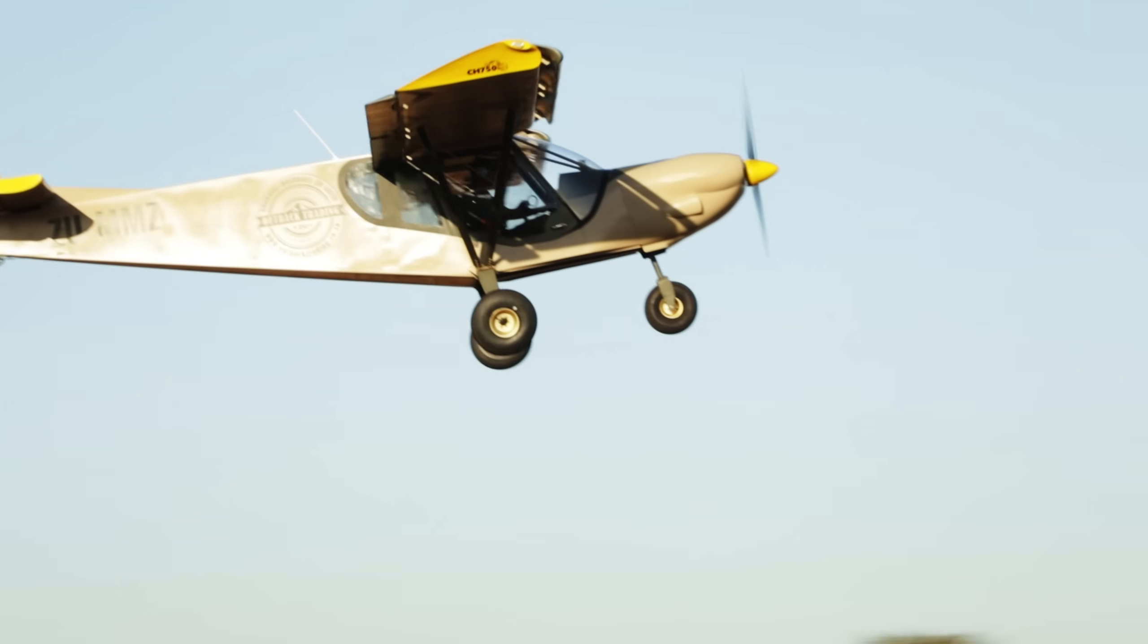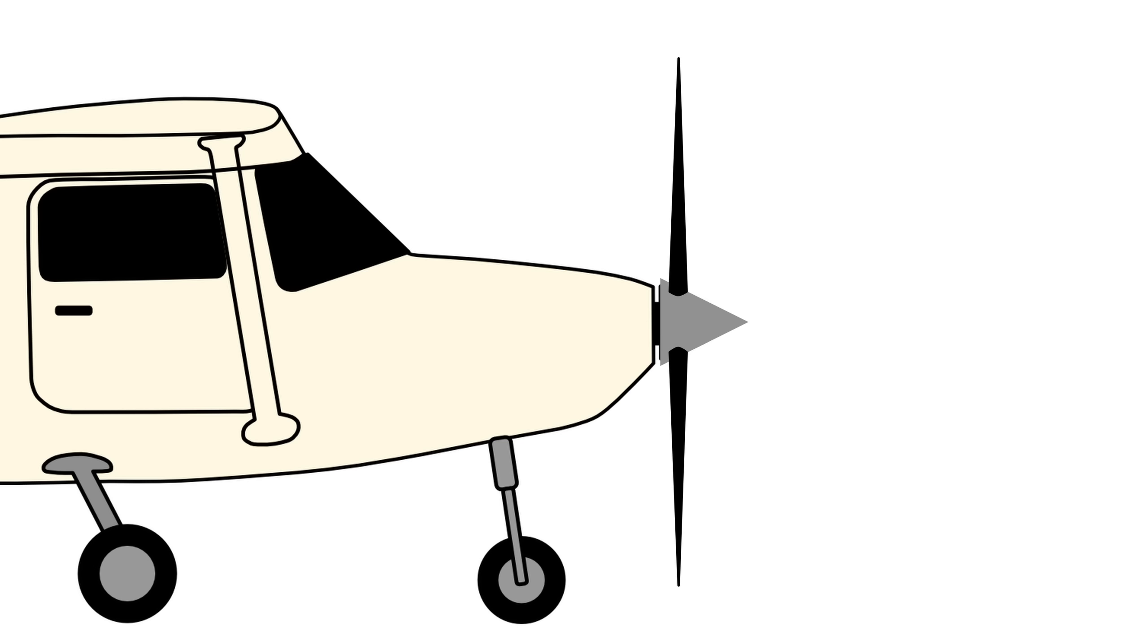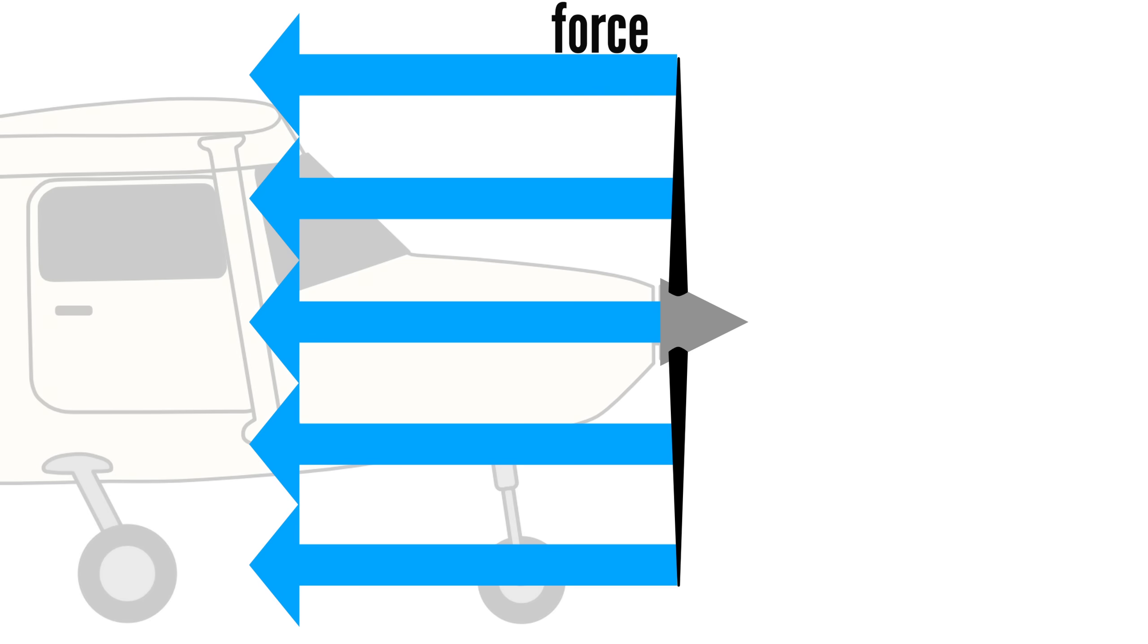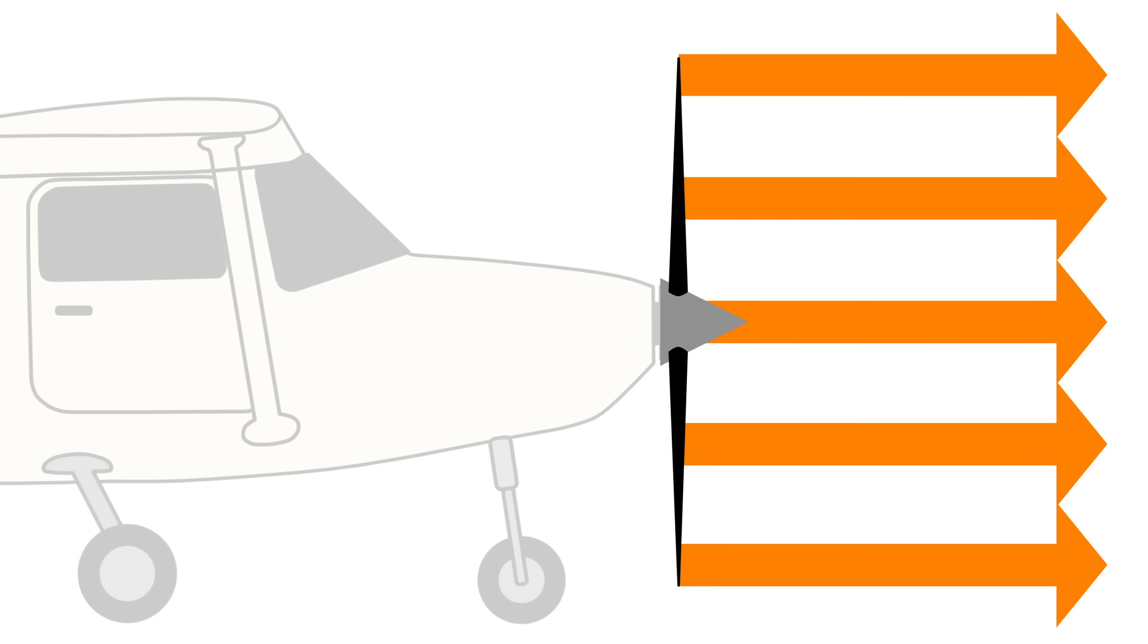When a propeller generates thrust, one of the forces acting on it is called thrust bending. As the propeller pushes air backward, it pulls forward with an equal amount of force in accordance with Newton's third law. This force is applied to the blades, causing them to bend slightly forward.